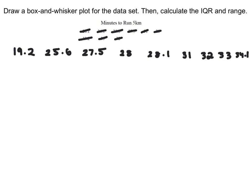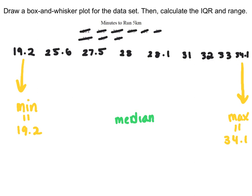The number all the way to the left is the minimum, which is 19.2, and the number all the way to the right is our maximum, which equals 34.1. The median is the middle number. We have 9 data points, so the median is the fifth number, which is 28.1.